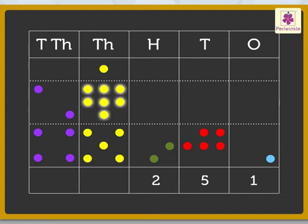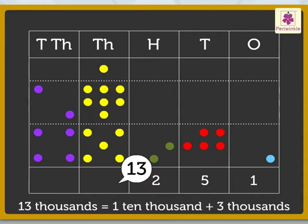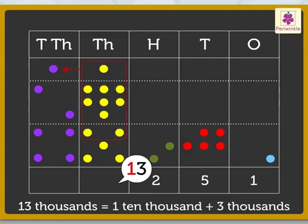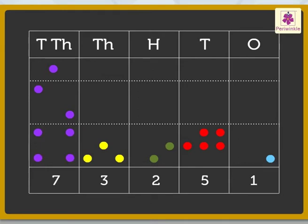Add the thousands: one yellow dot plus seven yellow dots plus five yellow dots is equal to thirteen thousands. We know that thirteen thousands is equal to one ten thousand and three thousands. So we regroup thirteen thousands as one purple dot and three yellow dots. We get three thousands.